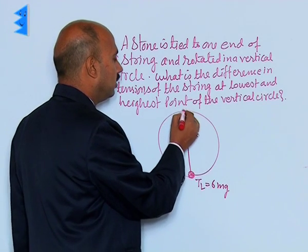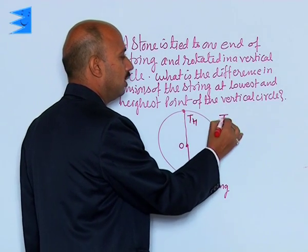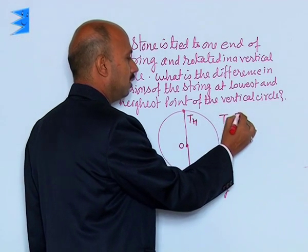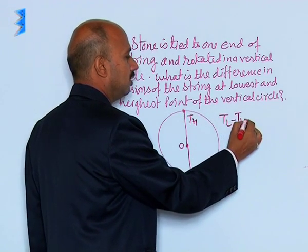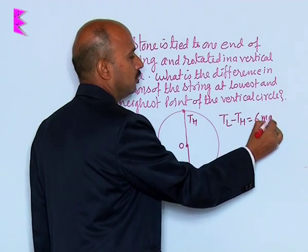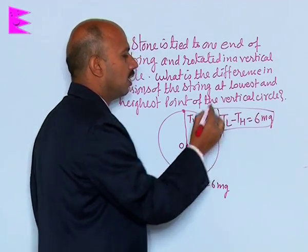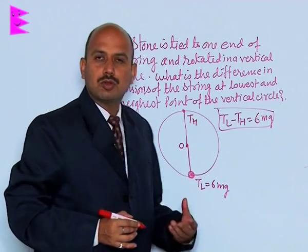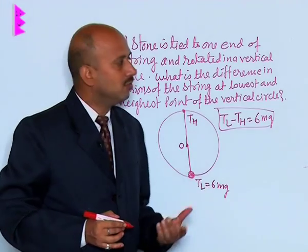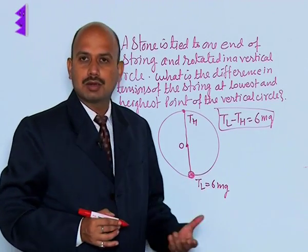The difference will be T_L minus T_H, which is equal to 6mg. This is just a conceptual question of one line — this type of question you can get for one mark.